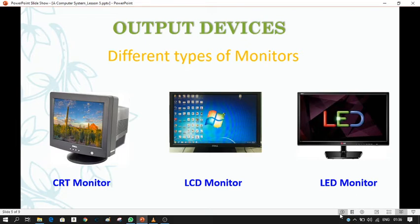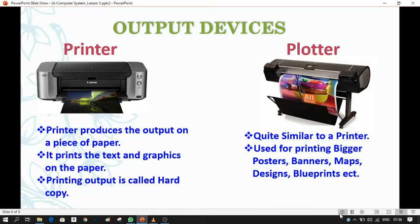Here we can see pictures of a printer and a plotter. A printer produces output on a piece of paper — it prints text and graphics on the paper. This printing output is called hardcopy. The output shown by the monitor is called softcopy, but when the same output is printed by a printer, it is called hardcopy.